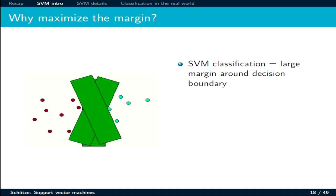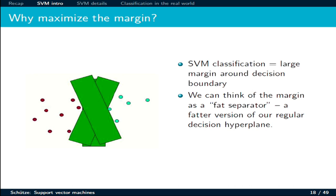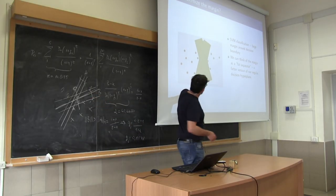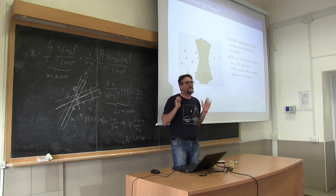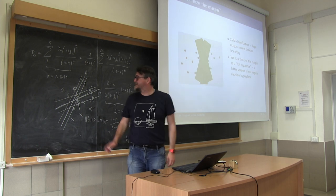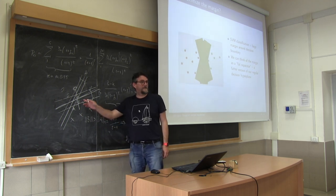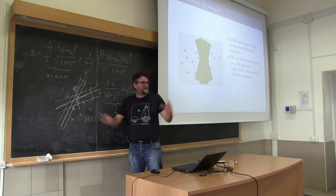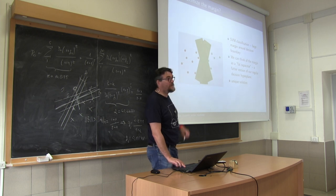You have a number of possible alternatives. What we are looking for is the fat separator — this region that is as big as possible. Please keep in mind this picture and note that we have different options. While in this picture all the options are more or less the same fatness, in this picture it should be clear that depending on your choice, the wideness of this region changes dramatically, and we want to find a unique solution.